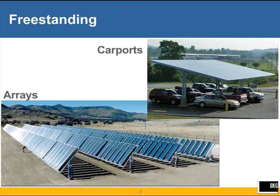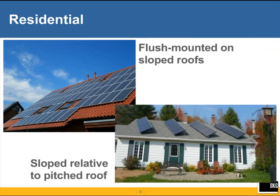There are several different types of common systems. Probably one of the most common are freestanding systems — arrays on racks, rows and rows of arrays on rack systems. But you also can see carports where, in addition to shading the cars, you are also gathering the sun on the top to take advantage of that power as well. There are residential applications, and these might be flush mounted on the roof as shown here, with varying gaps between the roof and the arrays.